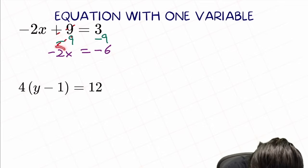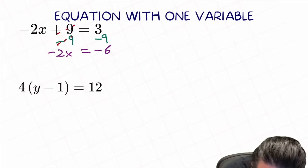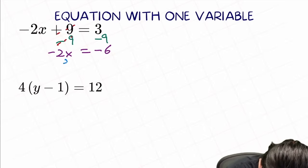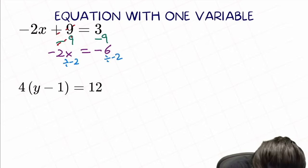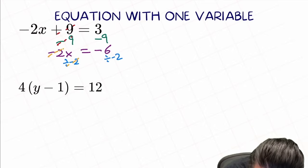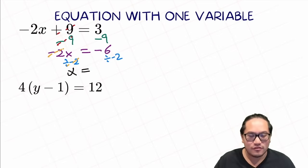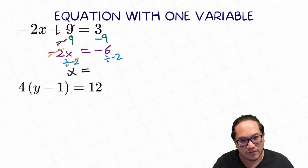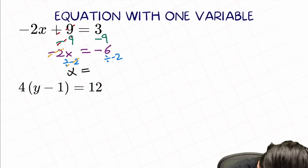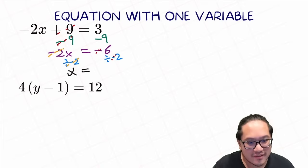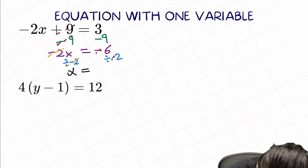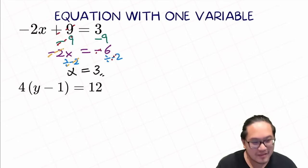Next, we have negative 2 multiplied by x. So let's do the opposite — divide by negative 2 on both sides. It will cause this negative 2 to cancel each other out, and what we have left is x. Remember the negative rule: when a negative number is divided by a negative number, it becomes a positive number, because the two negatives cancel each other out. So the answer is just 6 divided by 2, which is equal to 3.